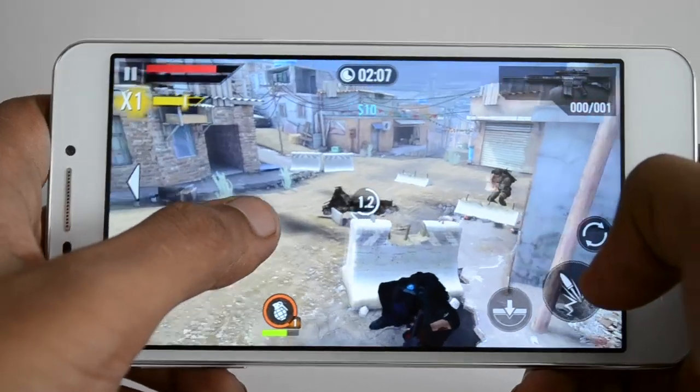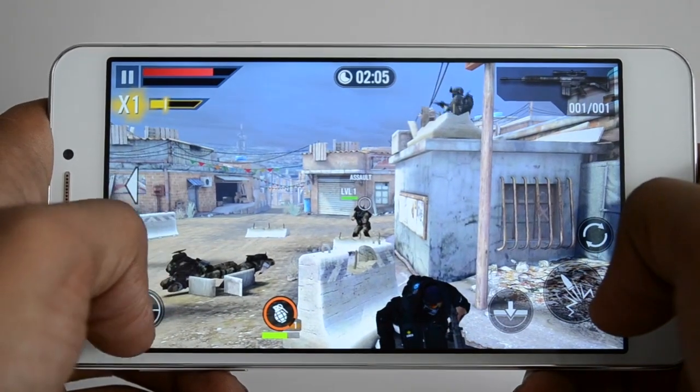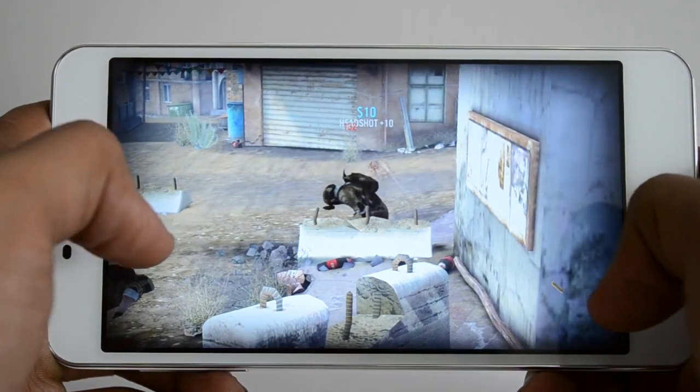The phone does get warm near this region where the processor is, but it's not uncomfortably hot. We saw temperatures reaching around 40-42 degrees. But in my opinion, that is still manageable and most phones heat while gaming.